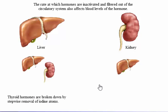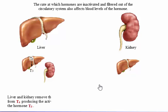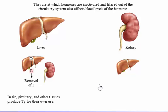The thyroid hormones are broken down by stepwise removal of iodine atoms in peripheral tissues. The thyroid gland secretes 20 times more T4 than T3; however, the active form of the hormone is T3. Therefore, the first step of breakdown of T4 in the liver and kidney produces most of the active hormone T3 in the bloodstream. Other tissues, for example the brain and pituitary gland, produce T3 for their own use. Breakdown continues by stepwise removal of iodine atoms. The half-life of thyroid hormone is several days.